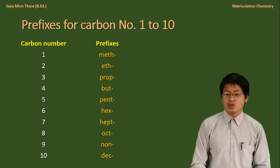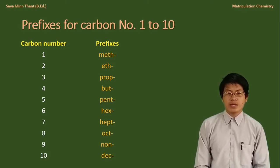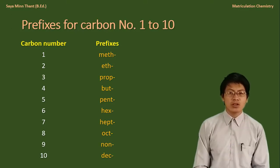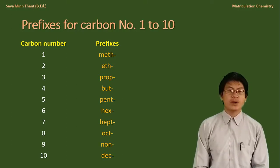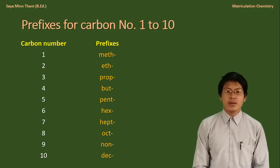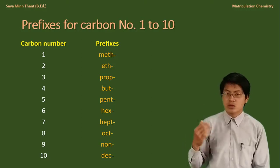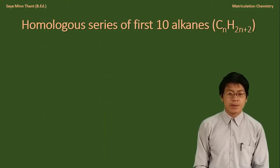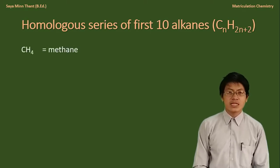The homologous series of the first ten alkanes follow the general formula CnH2n+2.